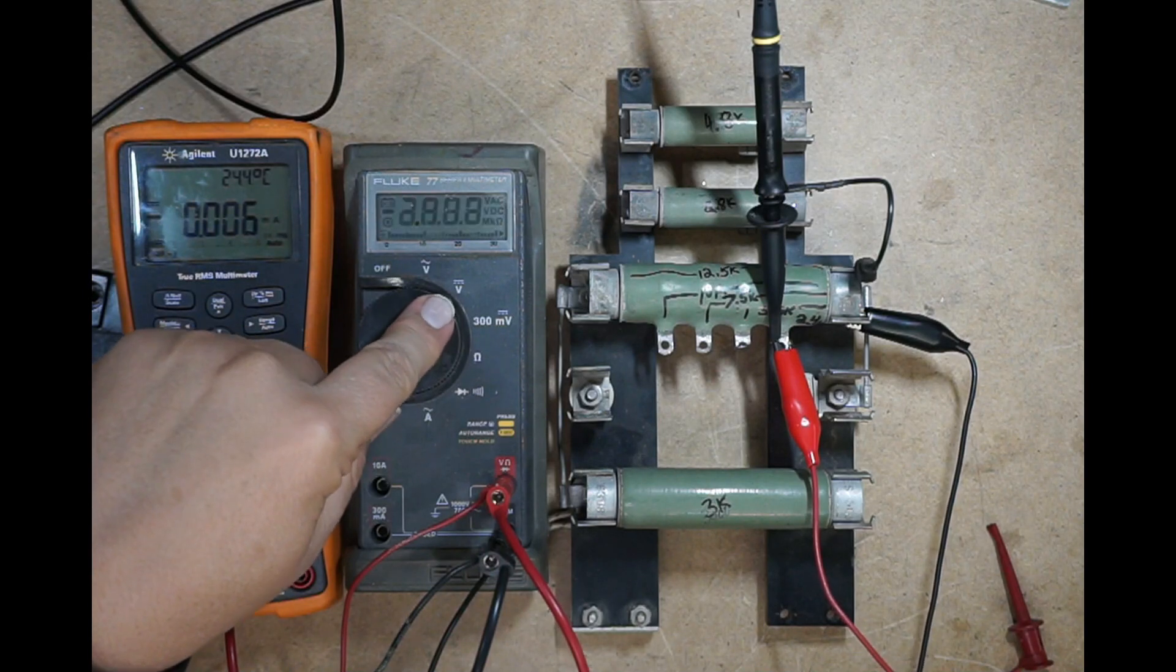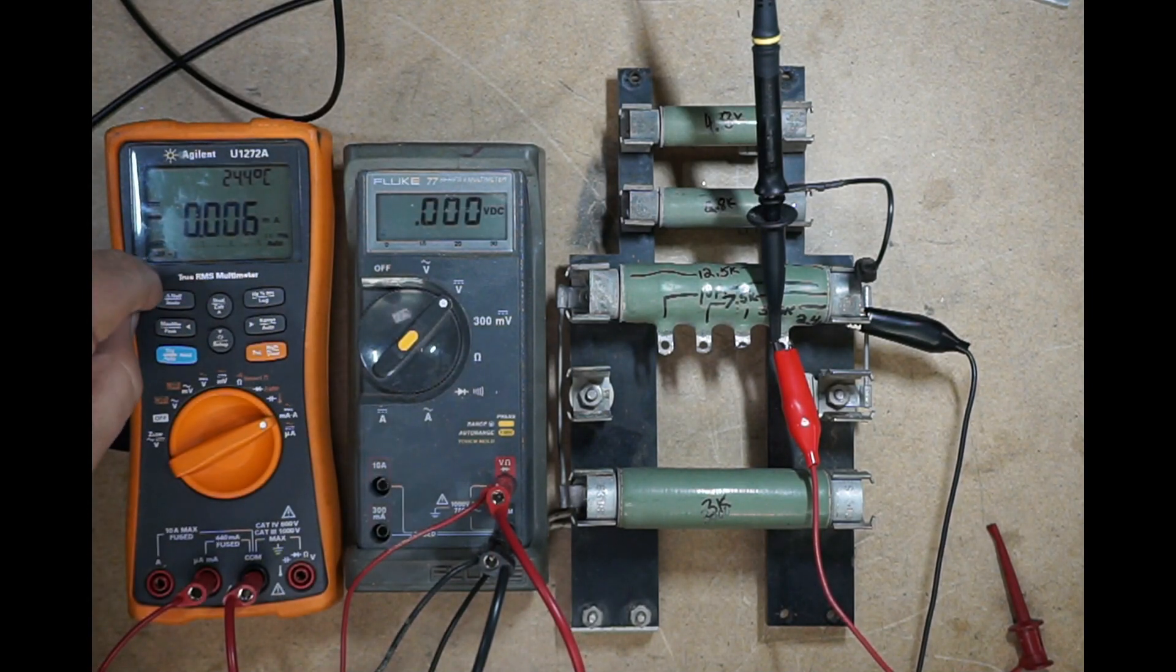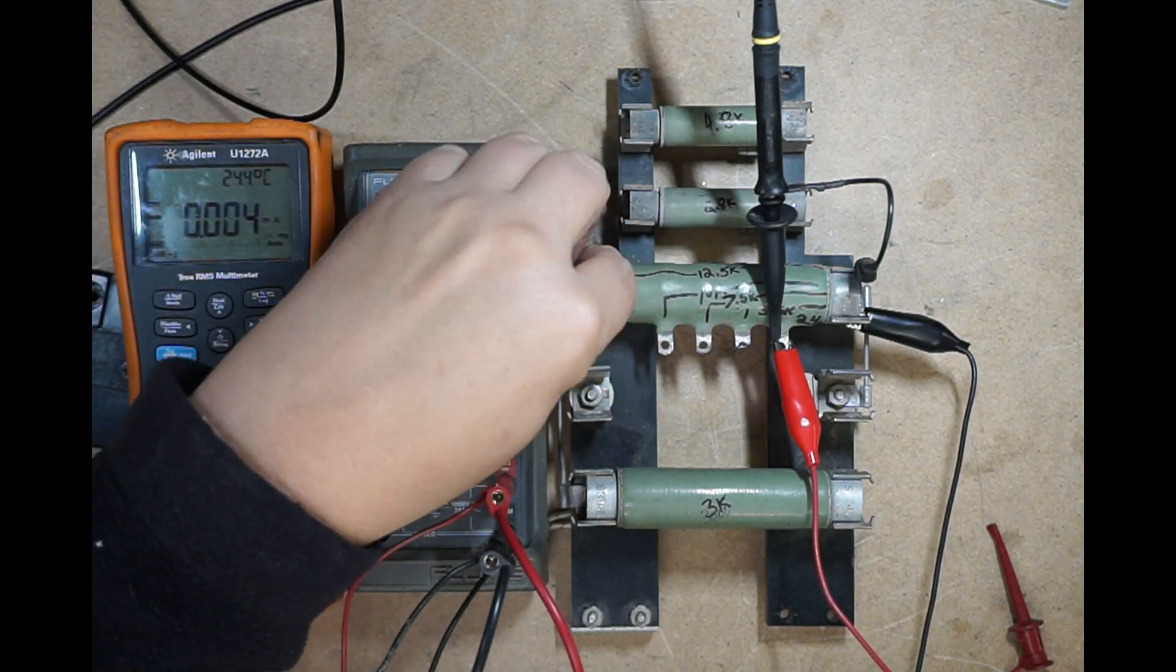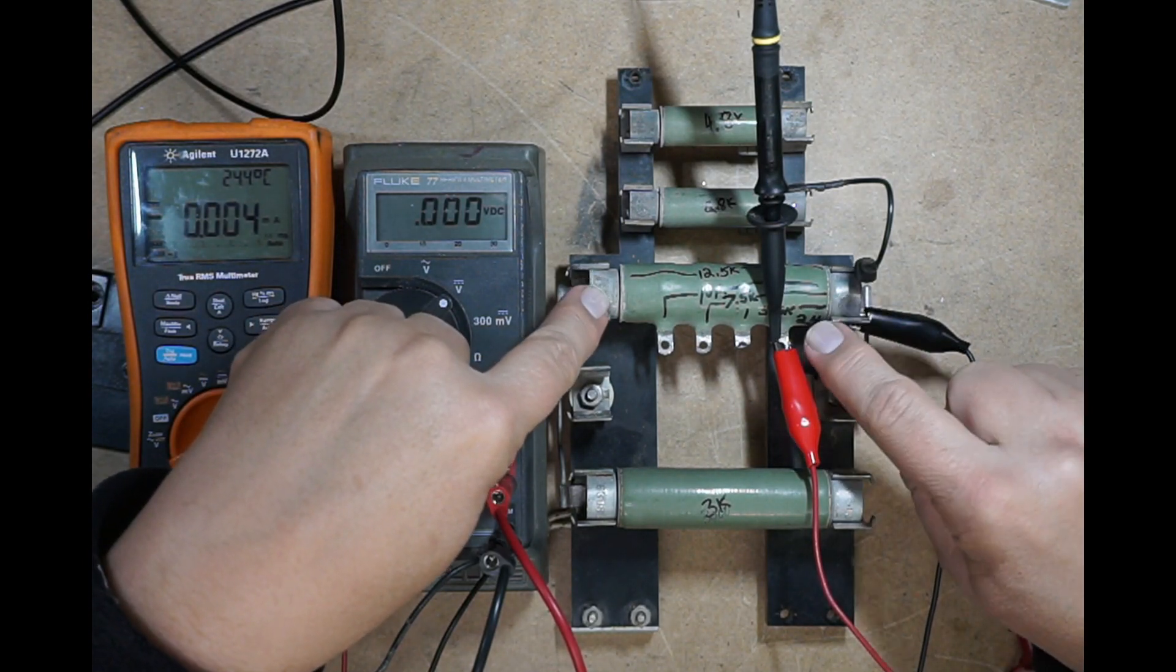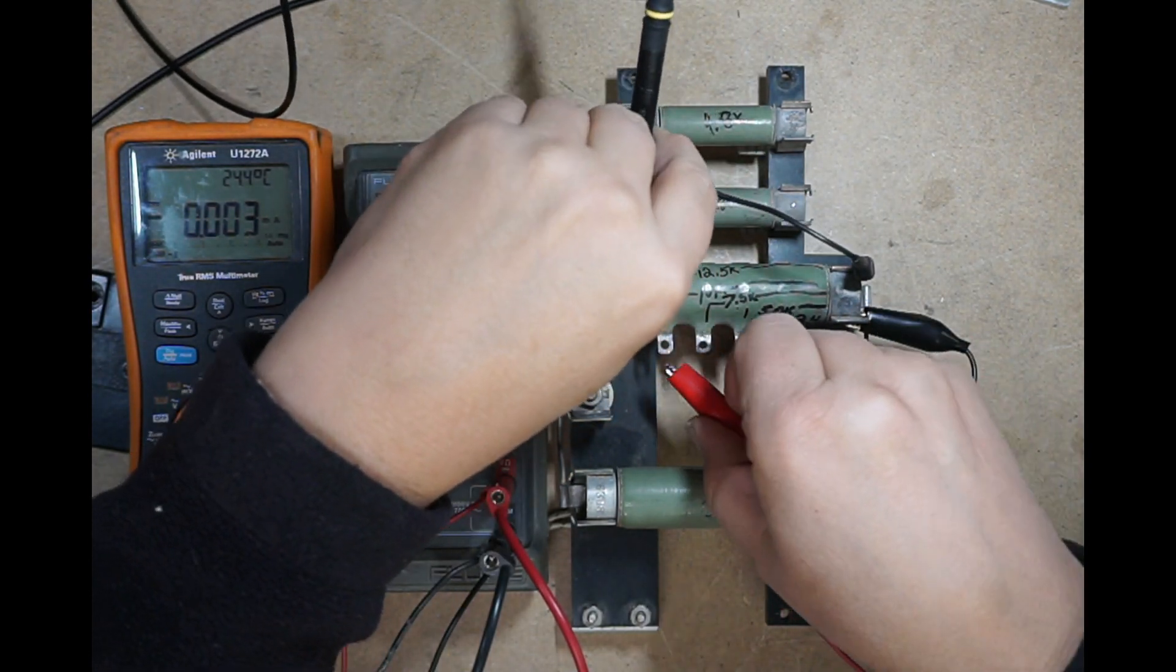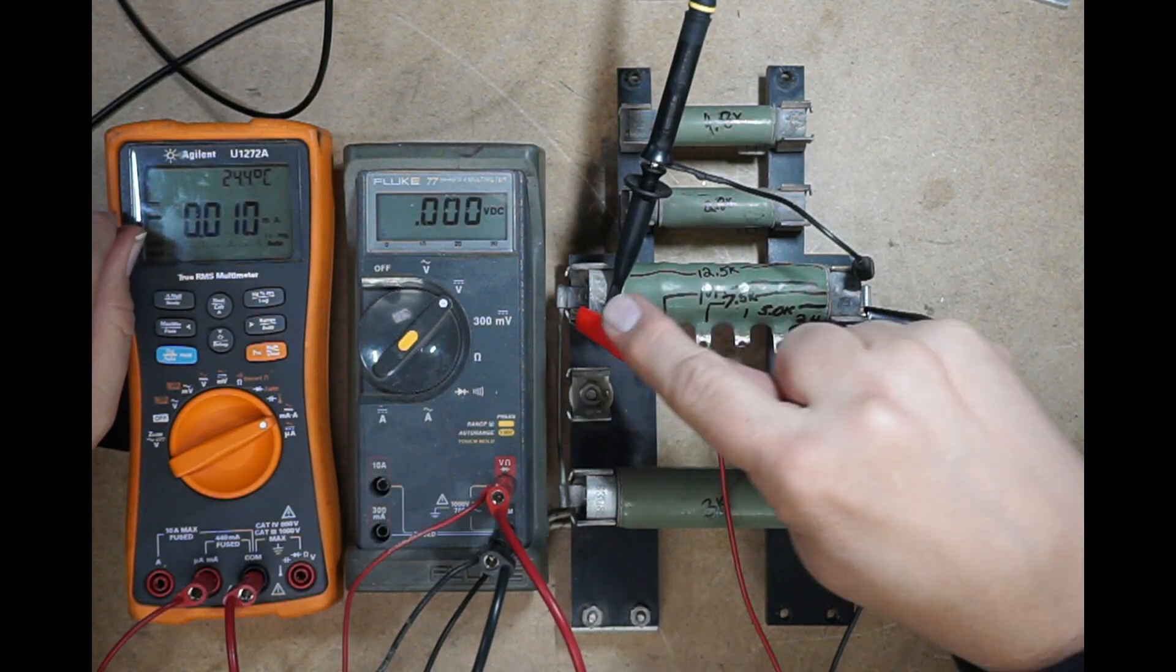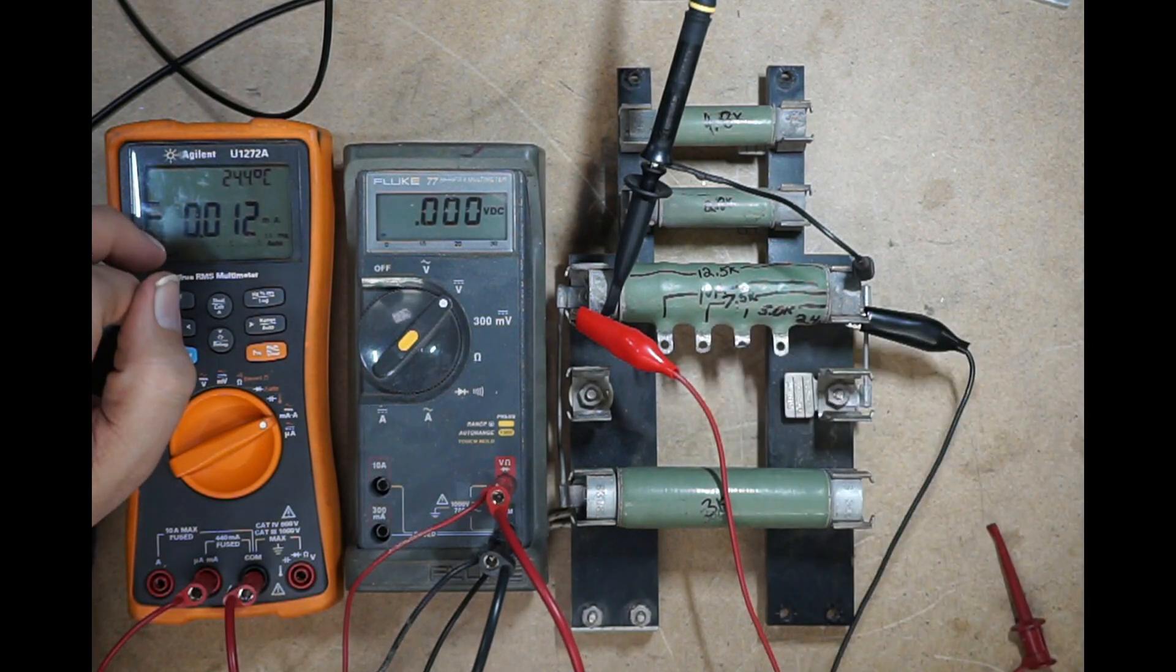So this meter is our DC voltage output, and this is the current. And I have this multi-tap resistor here that is 2.5k per tap. So this tap over here is 2.5k, 5, 7.5, 10, 12.5k. So this is a 12.5k resistor with multiple taps on it.